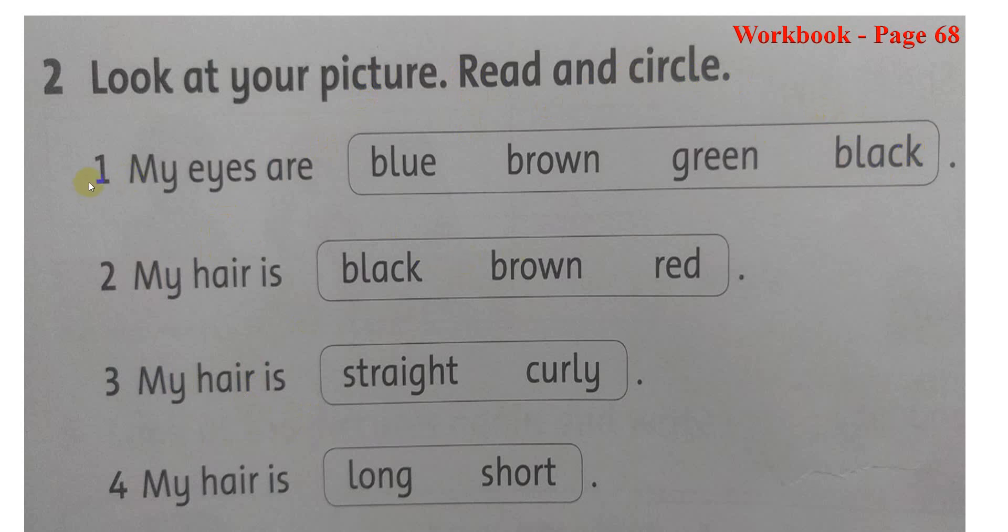For example 1. My eyes are... Mắt của tớ là... Là màu gì nhỉ? À, bức tranh cô vừa vẽ mẫu. Cô tô mắt của bạn ấy màu black. Vậy cô sẽ khoanh tròn chữ gì? Chữ black. My eyes are black.